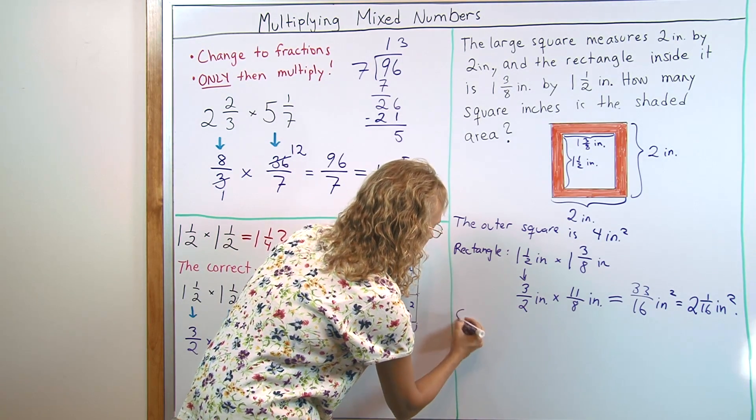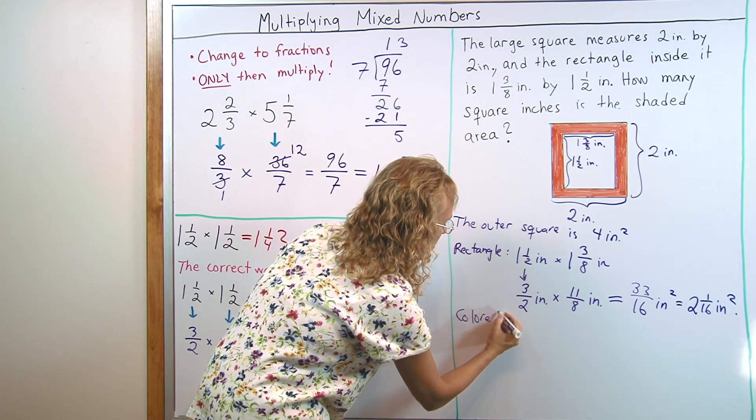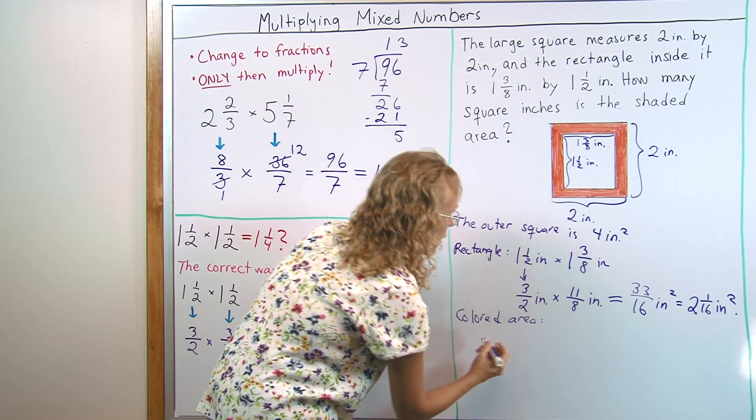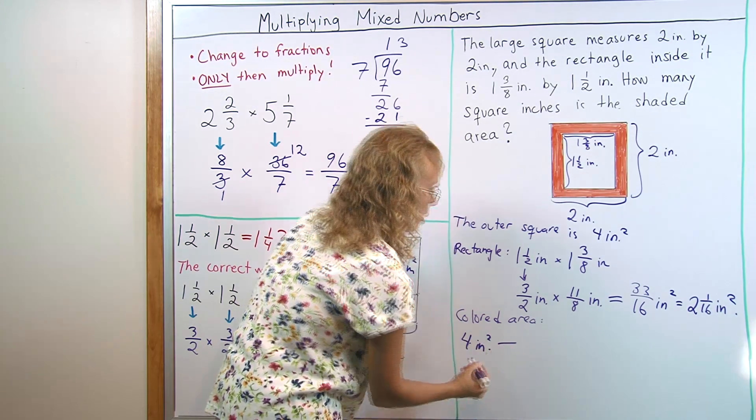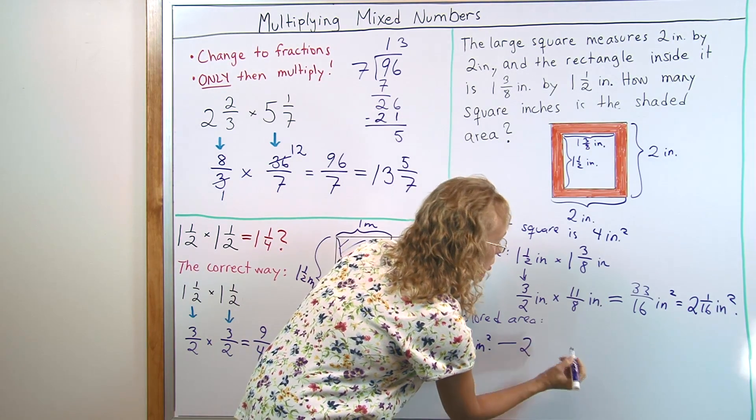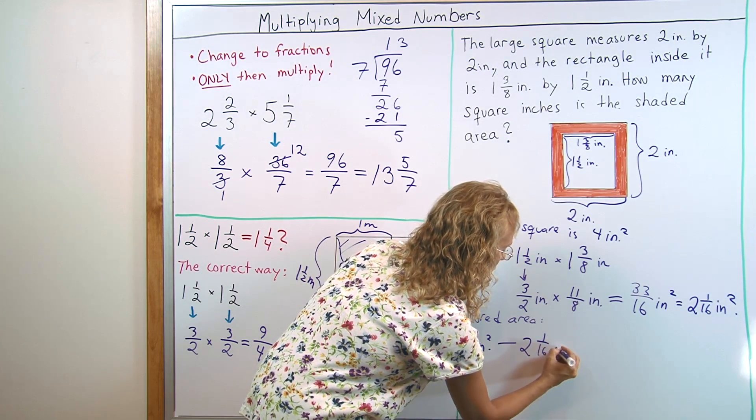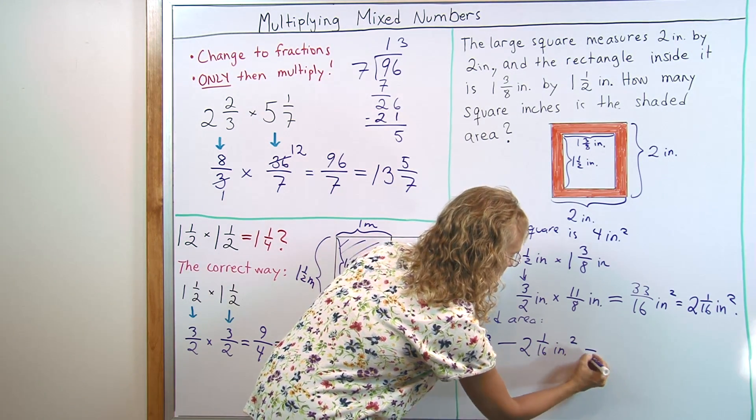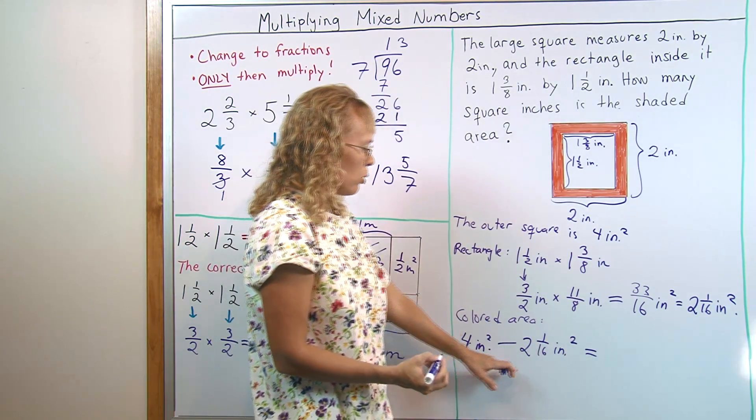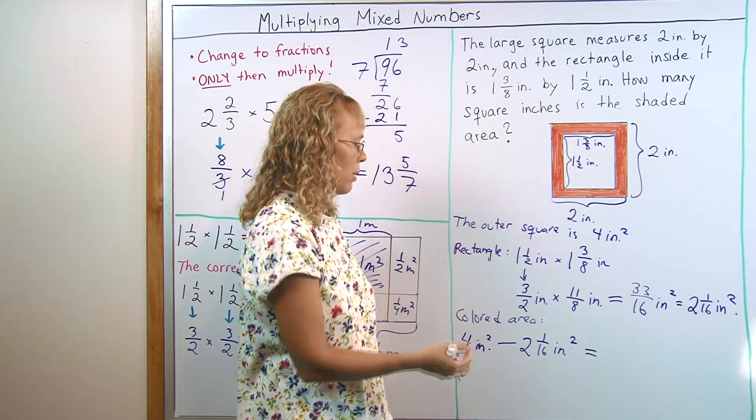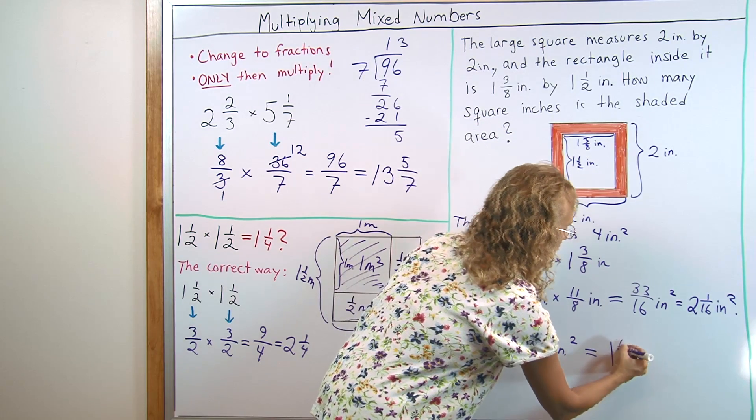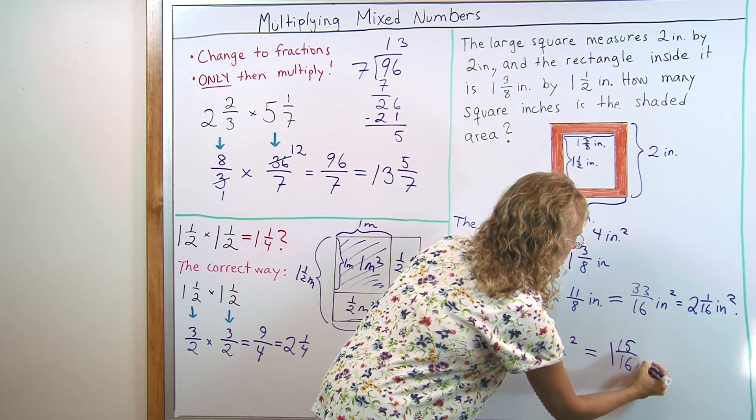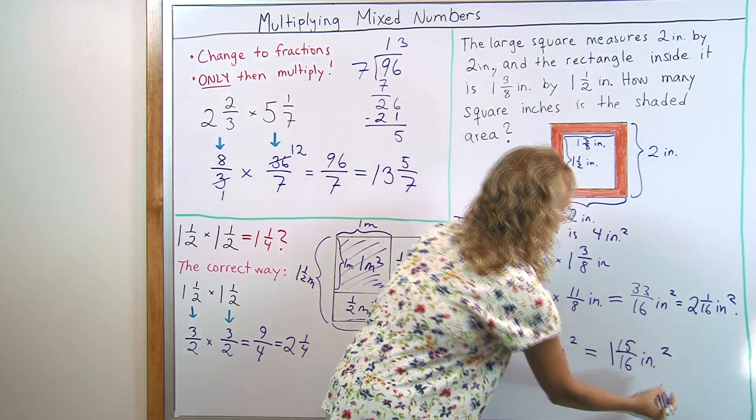Colored area is found by subtracting. I'll take 4 square inches minus that result, 2 and 1 sixteenths square inches. Okay. 4 minus 2 is 2 and then from the 2 I subtract 1 sixteenth. So, I am left with 1 and 15 sixteenths square inches. There we go.